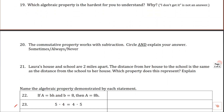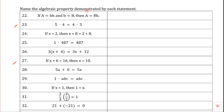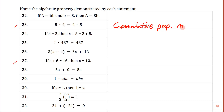On the next page, name the algebraic property demonstrated by each statement. Five times four equals four times five — both sides equal 20, but we switched the order, we moved them around. The word for moving around is commuting. This is the commutative property of multiplication.